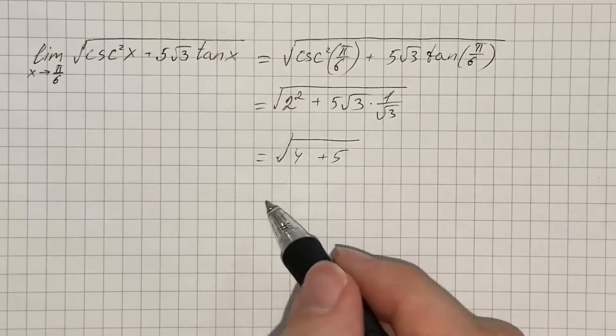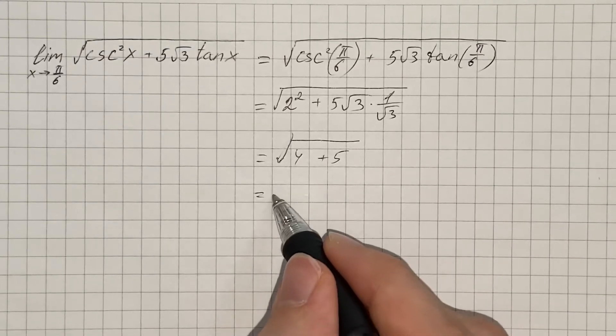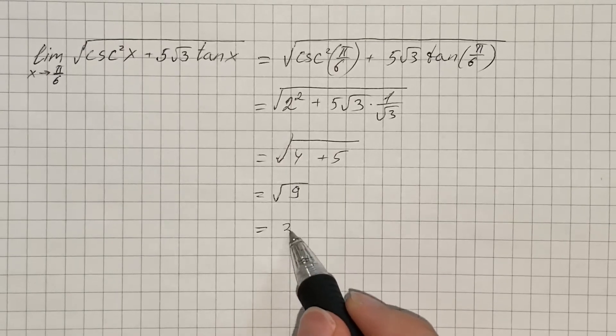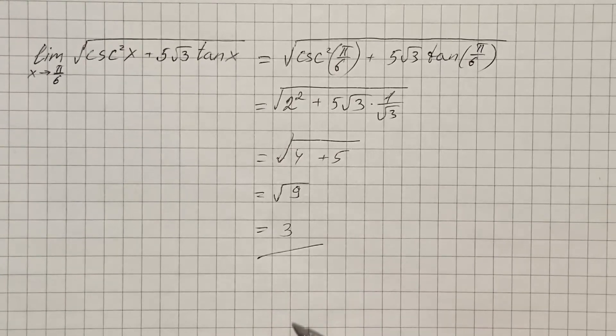That's √(4 + 5), which equals √9, and therefore our answer is 3. So that's the value of the given limit.